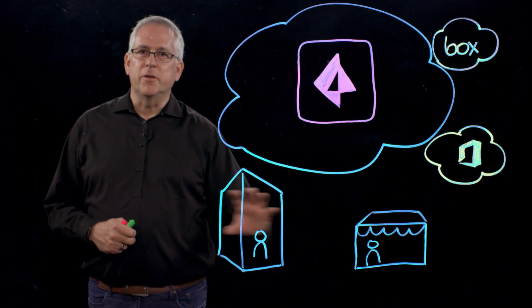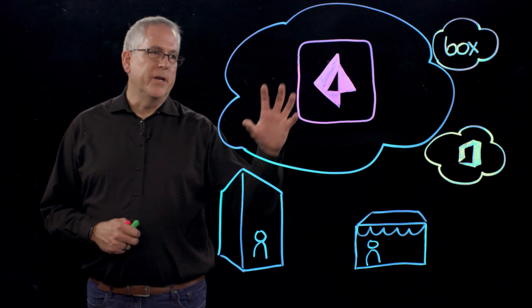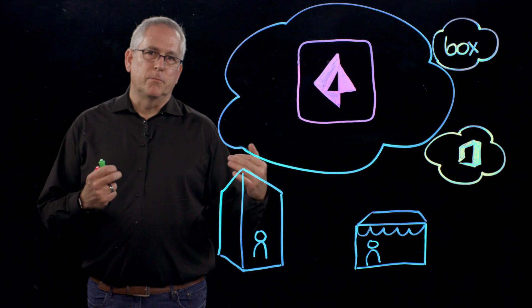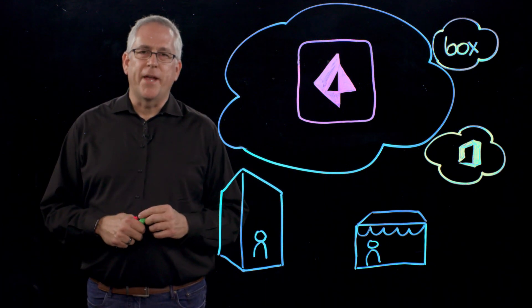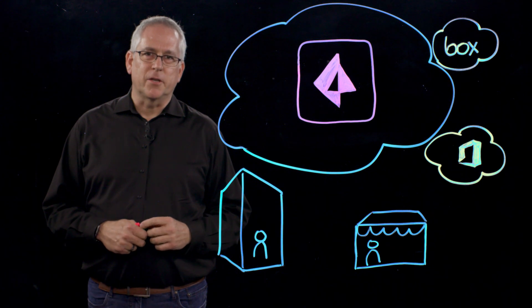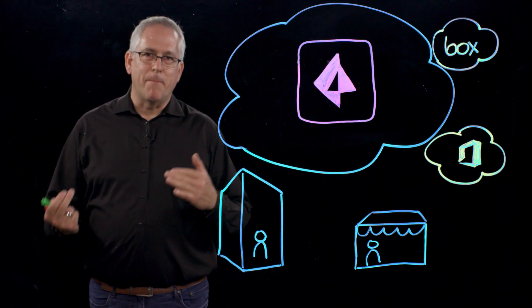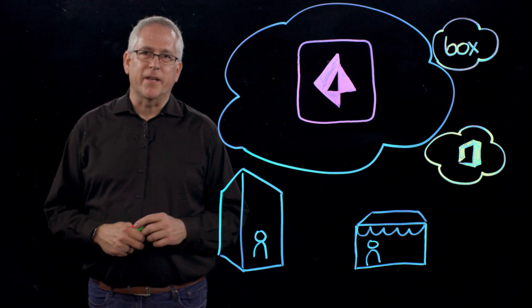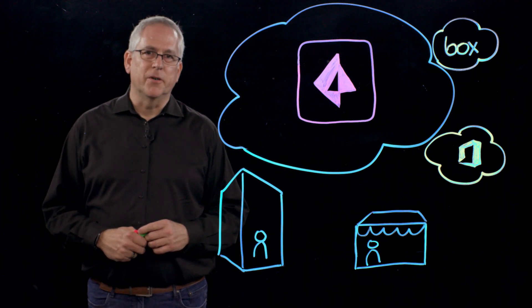So no matter where the users are, even worldwide, there is a Prisma Access presence somewhere near where they are and they get very high performance, very good enterprise grade security without having to backhaul or bring that traffic back to a headquarters for security.